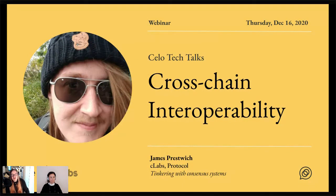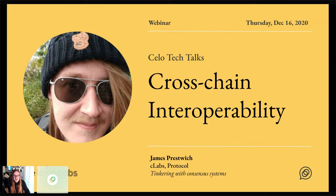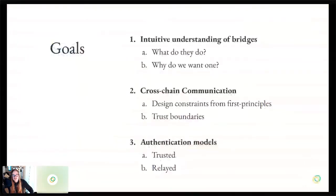My name is James Prestwich. I'm a protocol engineer at C-Labs working on interoperability, hard forks, consensus systems, etc. My background here is co-founding Summa. We worked really an awful lot on atomic swaps back in 2017 and then pivoted into working on more SPV-based cross-chain communication after that. The goals for this talk are to get an intuitive understanding of these applications — what is a bridge and why do we want it — and then dive down into how they're constructed and talk about cross-chain communication in a general sense. Go from first principles and talk about why these applications exist, how they work, and why the peculiarities of a blockchain demand that they work this way.